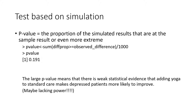The p-value is the proportion of the simulated results that are at the sample result or even more extreme. I calculated the observed difference in proportions in my code, and I'm looking to see if the ones that I simulated are greater than or equal to the observed difference. By taking the sum, I'm counting how many had values at the observed difference or further into the distribution, and then dividing by the number of simulated samples gives my p-value. The p-value comes out to 0.191, and this large p-value means that there's weak statistical evidence that yoga added to standard care makes depressed patients more likely to improve.